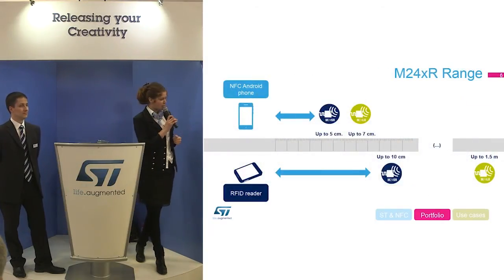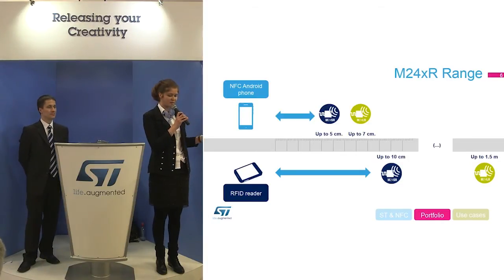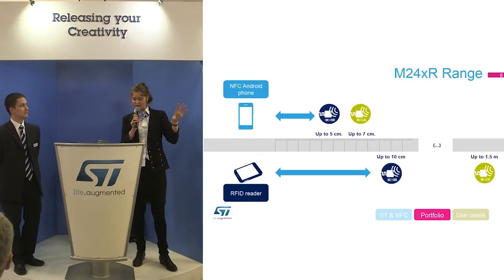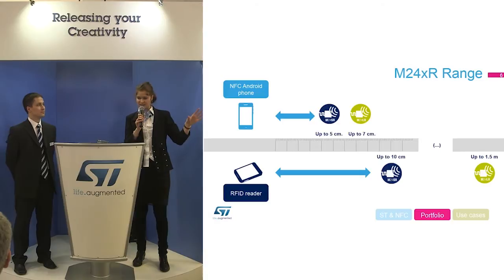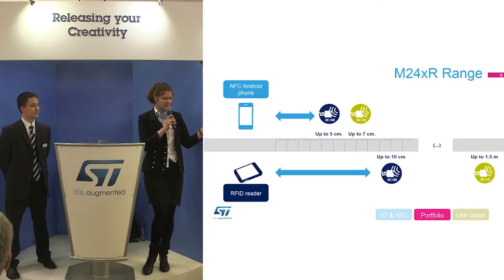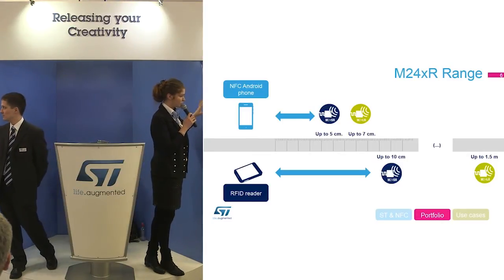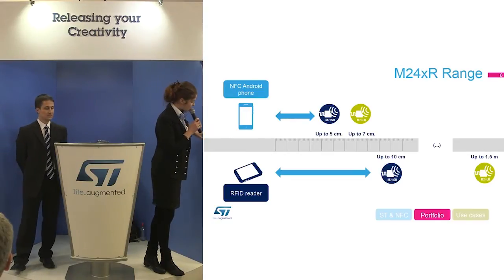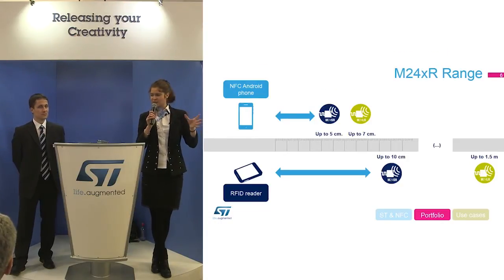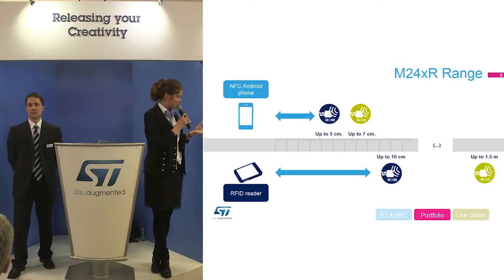Regarding read range: with a smartphone and NFC, you can reach up to five or seven centimeters, whether using the M24SR or M24LR. With an RFID reader, you can go up to 10 centimeters or even one meter. This is linked to the technology, modulation, and other factors. It also depends on the size of the tag antenna, the reader antenna, and the power — there is an equation behind this.